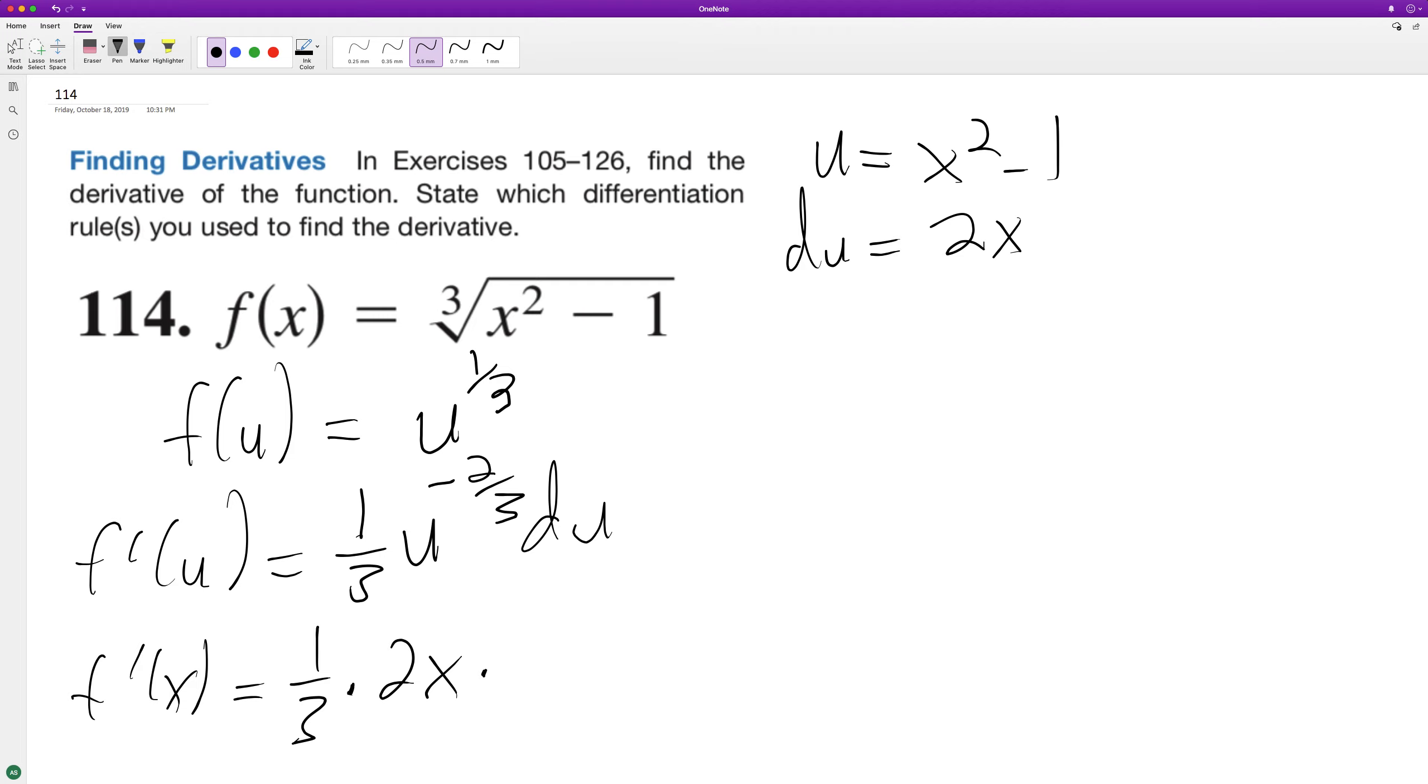And then we'll have over 1 over, and then this is going to be x squared minus 1 raised to the 2 thirds. That's the u raised to the negative 2 thirds.